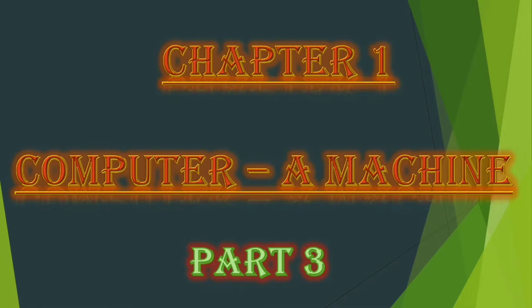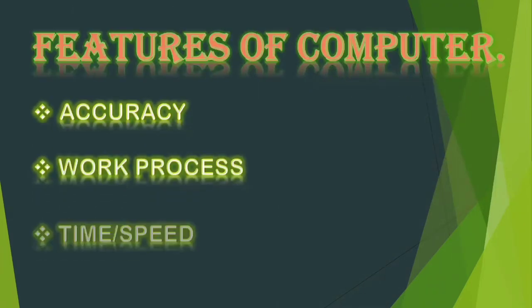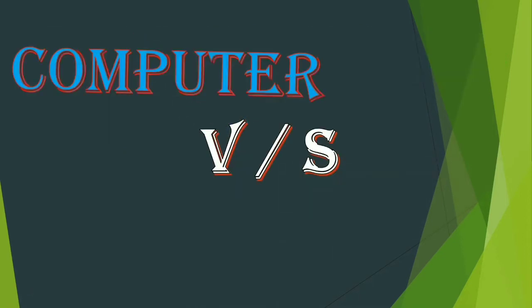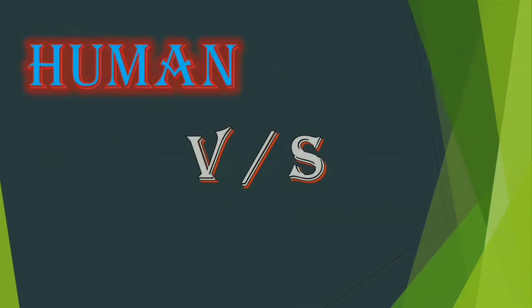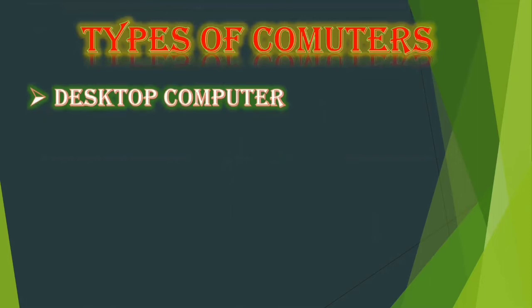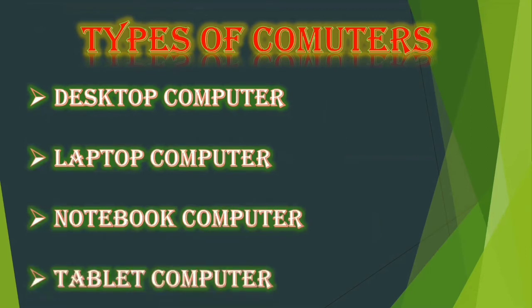In the previous class, you have learned about the smart machine computer and the features of computers like accuracy, work process, time and speed, storage, and also computer versus human and human versus computer, and also the different types of computers. The different types of computers are desktop computer, laptop computer, notebook computer, and tablet computer. So based on this lesson, let us do some activities and exercises.